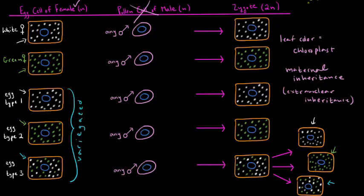The same concept applies to the mitochondria. The mitochondria also has its own DNA. So if a person were to have a disease related to the DNA inside the mitochondria, we would know that that person got it from his or her mother and not from his or her father, because the mitochondria also exhibits maternal inheritance.